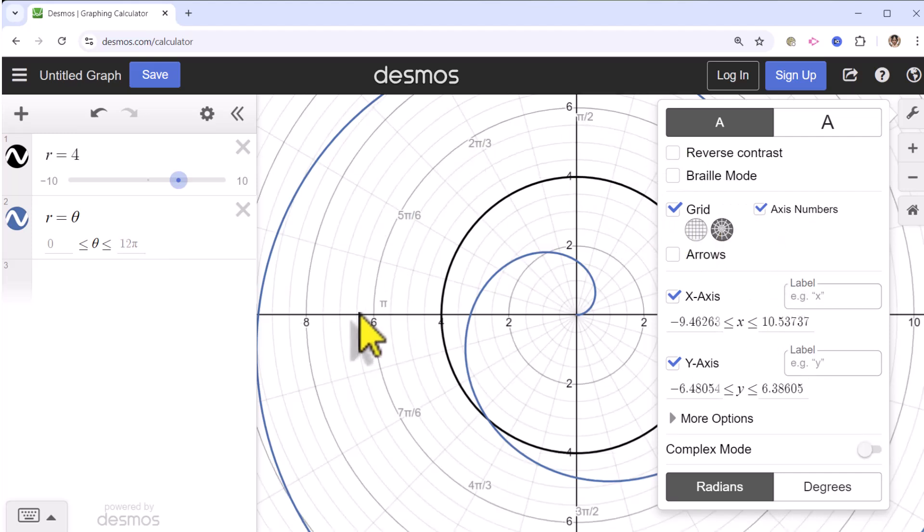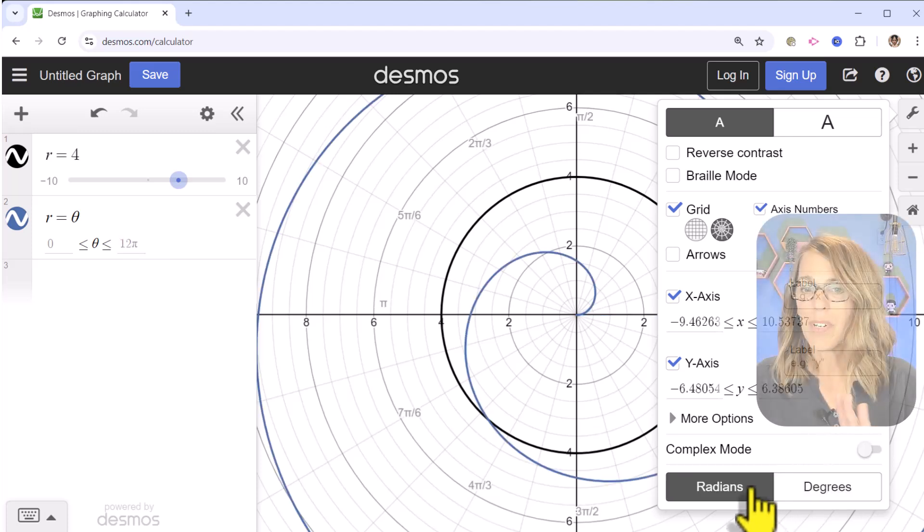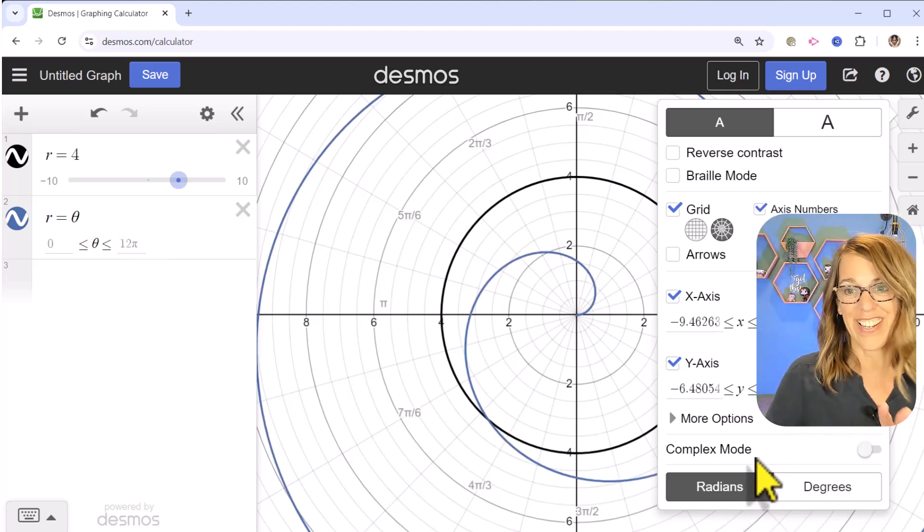Notice how as I travel around the polar coordinate system, the angle traveled right now is labeled in radians. If I change that to degrees, it's going to change those labels into degrees. I'm going to be working for the most part here in radians.